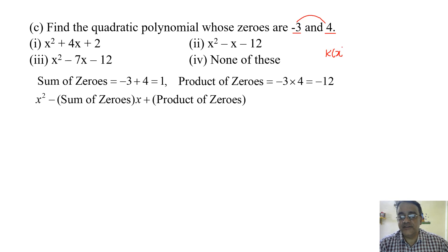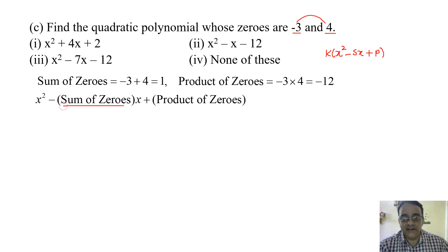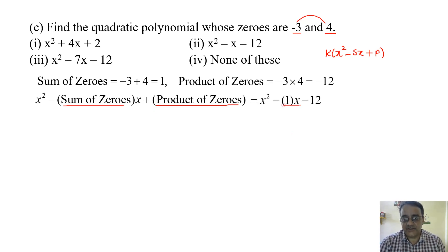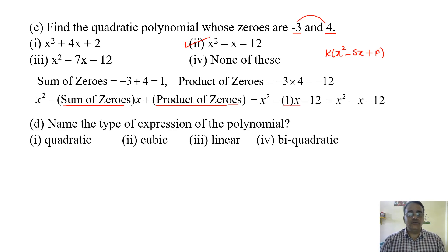You can use alpha plus beta also in place of sum, and alpha into beta for product of zeros. Substituting sum equals one and product equals minus twelve, we get x squared minus x minus twelve. So the correct option is the second option.